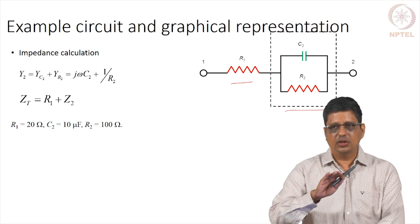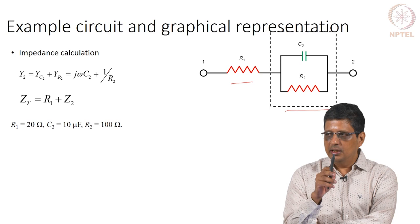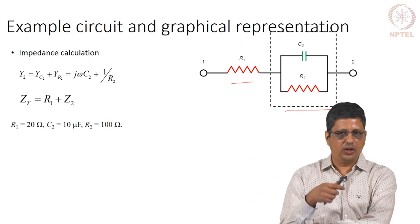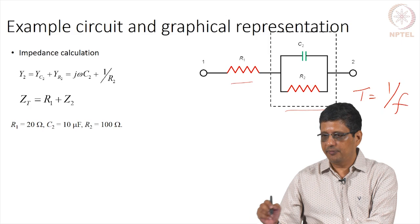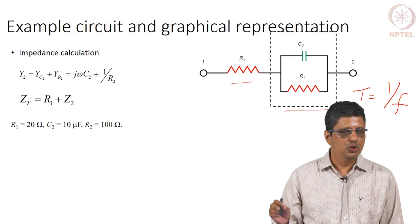You also have to think about why it takes a long time to measure at low frequency. If I say 1 millihertz, that means it takes 1000 seconds for one cycle to complete. I need at least one cycle of data to get some idea of the impedance. The period is the inverse of the frequency, so when I go to low frequency, the period becomes much, much longer and we have to wait for a longer time.